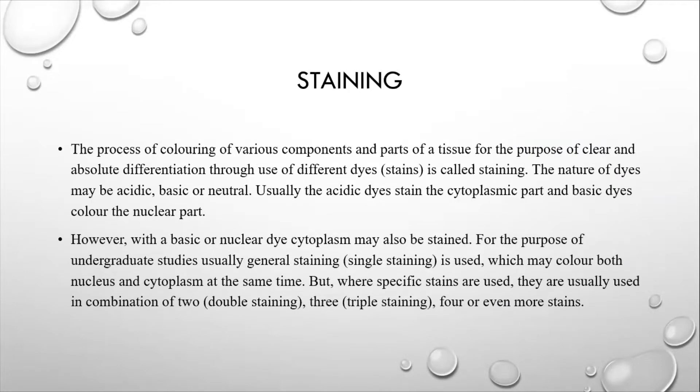Staining. The process of coloring of various components and parts of a tissue for the purpose of clear and absolute differentiation through use of different dyes or stains is called staining. The nature of dyes may be acidic, basic, or neutral. Acidic dyes stain the cytoplasmic part. Basic dyes color the nuclear part. However, basic or nuclear dye may stain the cytoplasm.